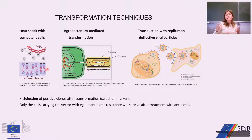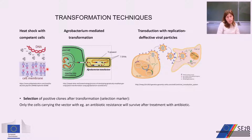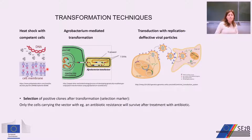Another method is transduction with replication-defective viral particles, inspired by the natural mechanism viruses use to integrate their genetic material into infected cells. In this case, our gene of interest is carried in the viral genetic material, but done safely with replication-defective viral particles rather than real viruses. After transformation, it is very important to select the cells that contain the recombinant vector from those that do not. For example, if the selectable marker is an antibiotic-resistance gene, only cells carrying the vector will survive antibiotic treatment.